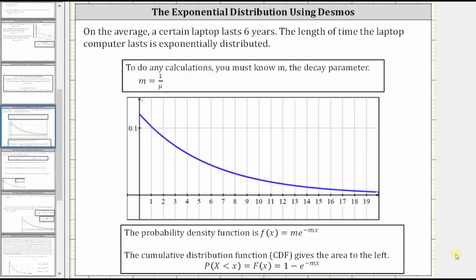On average, a certain laptop lasts six years, which means the mean, or mu, is equal to six years. The length of time the laptop computer lasts is exponentially distributed. To do any calculations with an exponential distribution, we need to know m, the decay parameter, which is one divided by mu. In our case, mu is six, and therefore the decay parameter is 1/6.